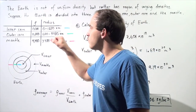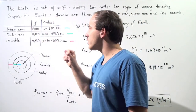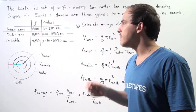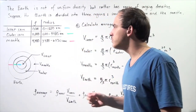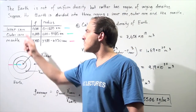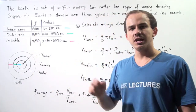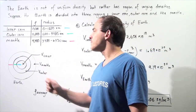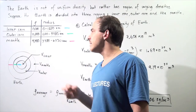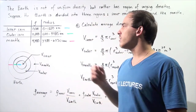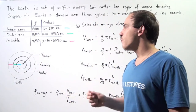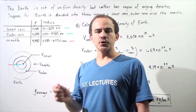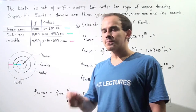The density for the inner core is 13,000 kilograms per meter cubed. The density of the outer core is 11,000 kilograms per meter cubed. And the density of the mantle is 4,400 kilograms per meter cubed.